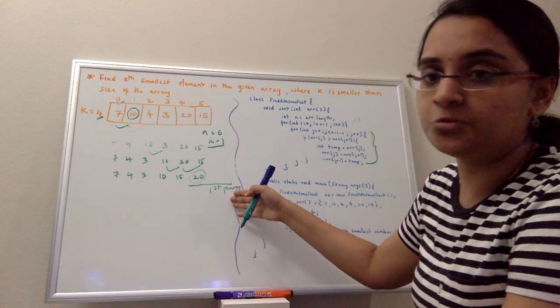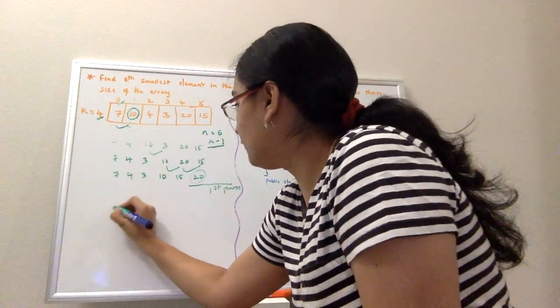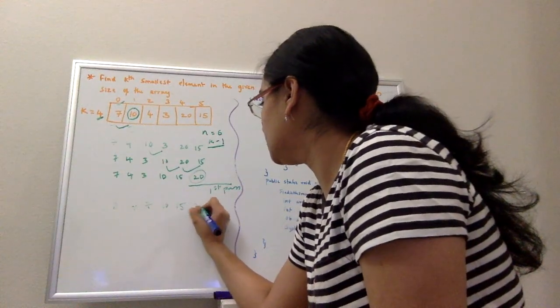By doing this I'll have a final array of 3, 4, 7, 10, 15, and 20. So this is my final array.